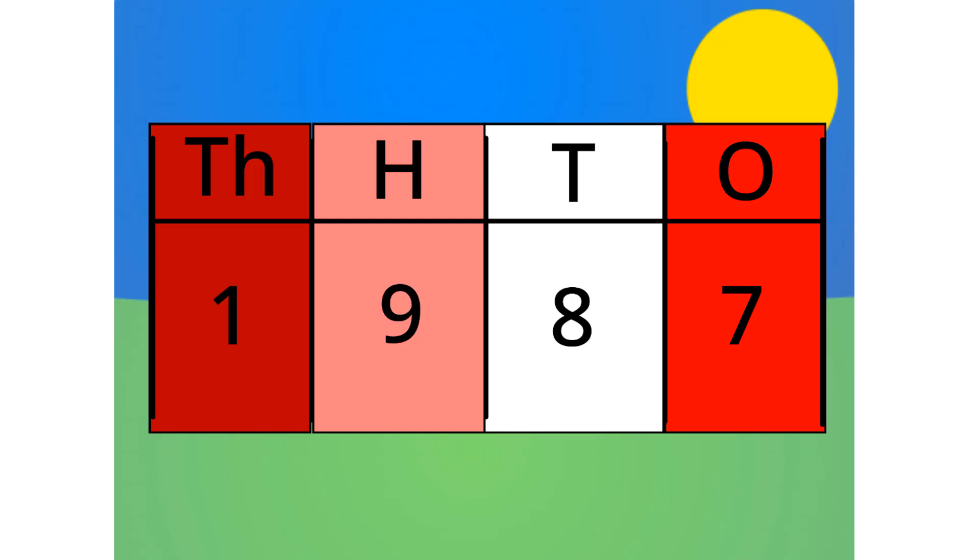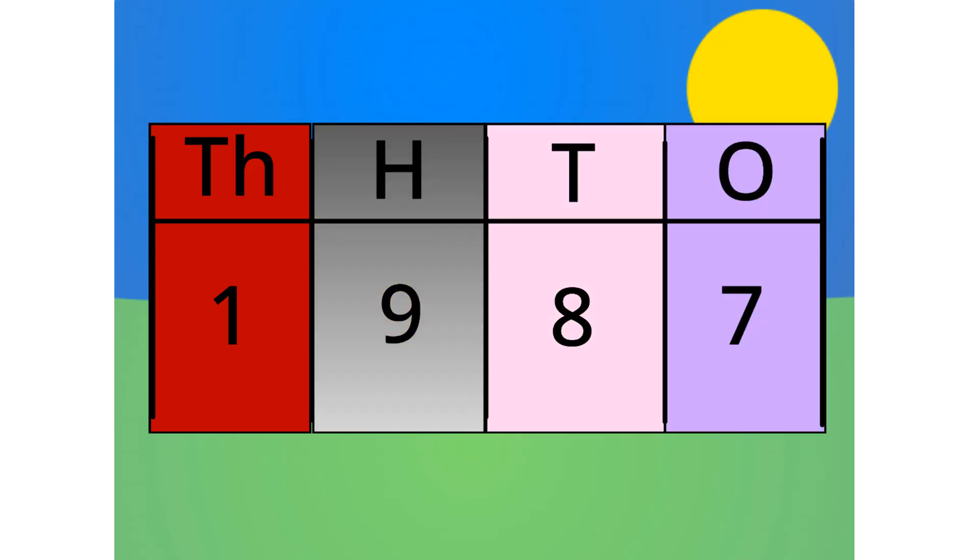All right, let's split it into its units. This number is made up of 1 thousand, 9 hundreds, 8 tens, and 7 ones. See?